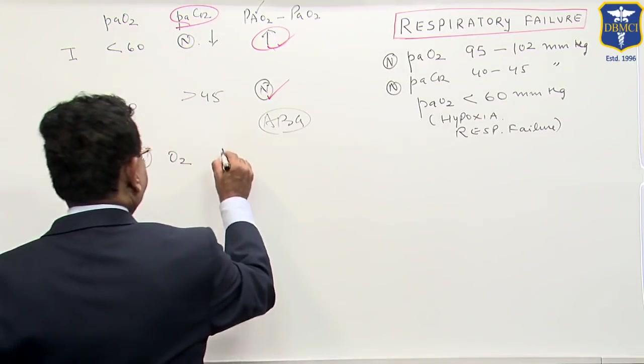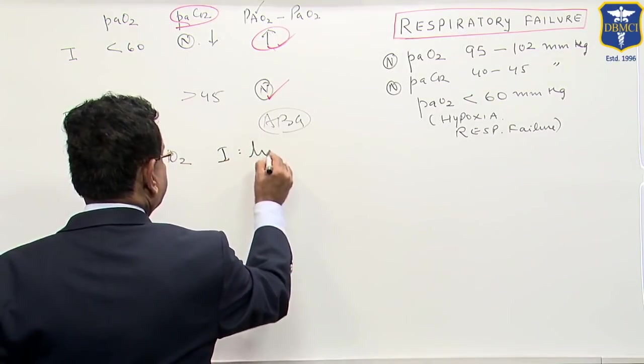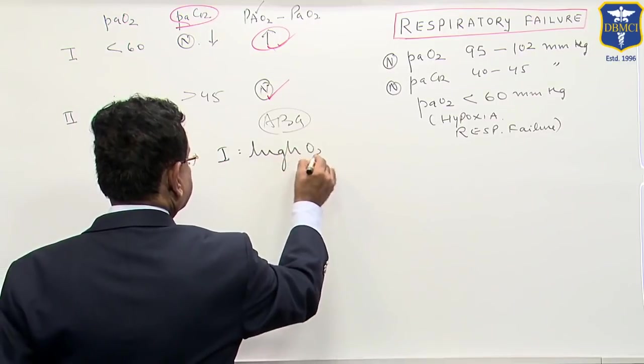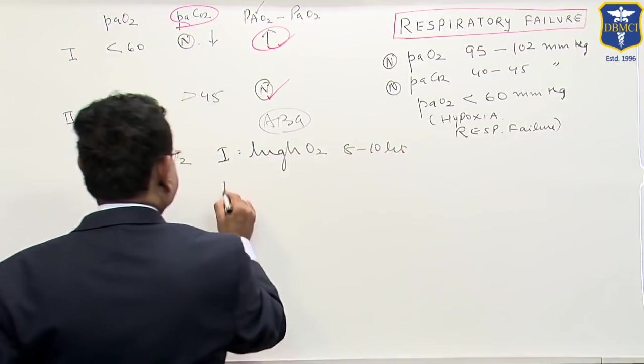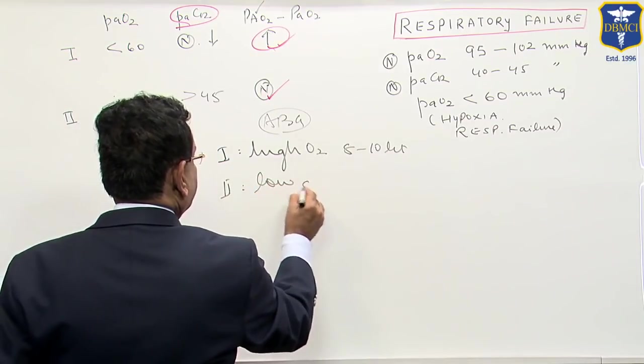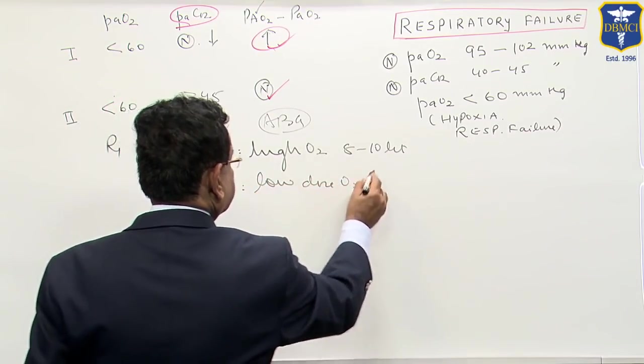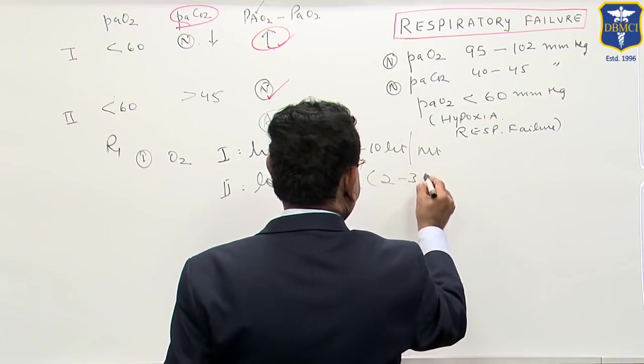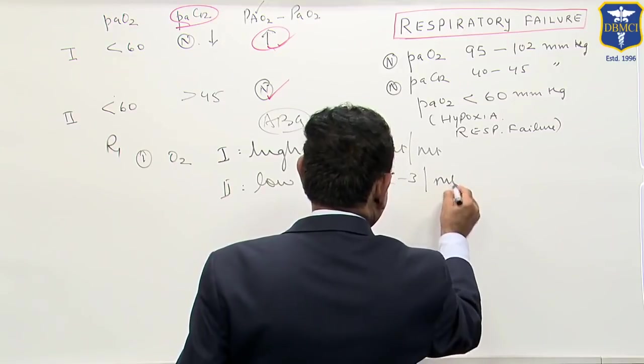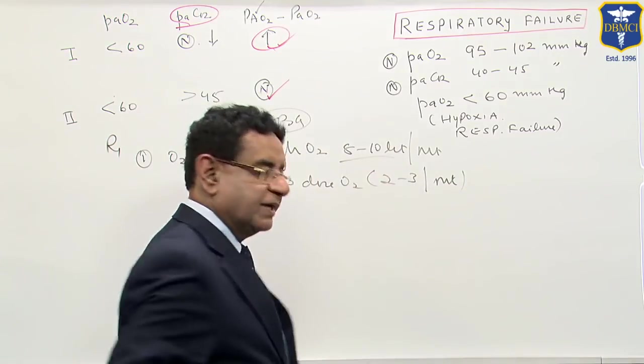In type 1 failure, you give high dose of oxygen, 8 to 10 liters. In type 2, you give low dose oxygen, 2 to 3 liters per minute.